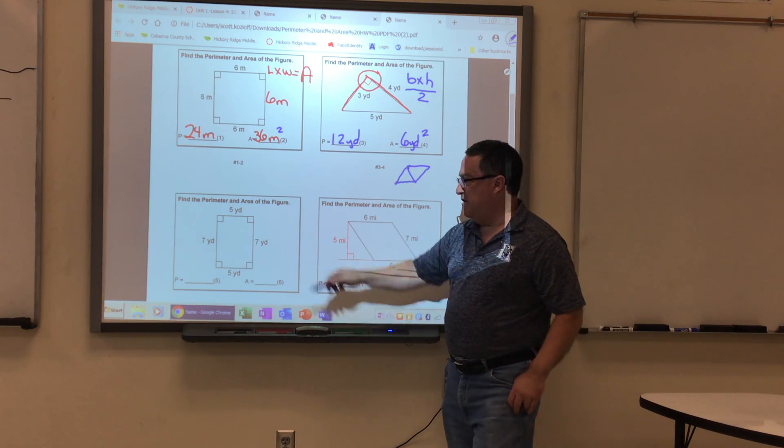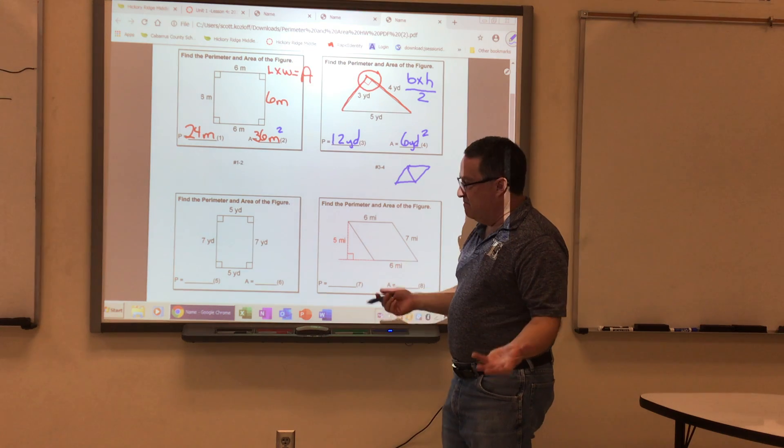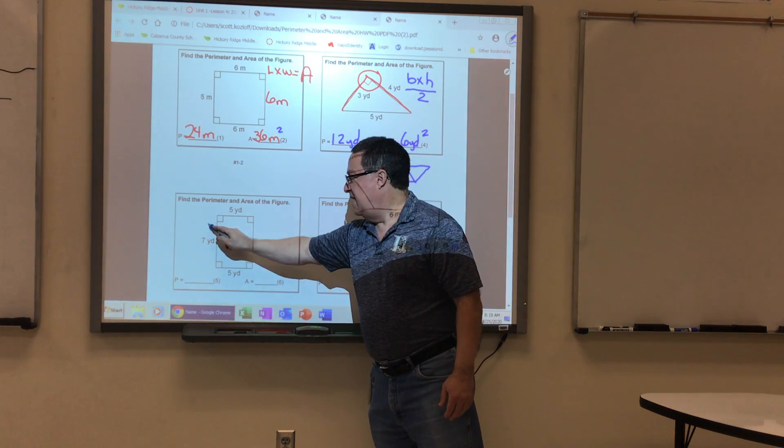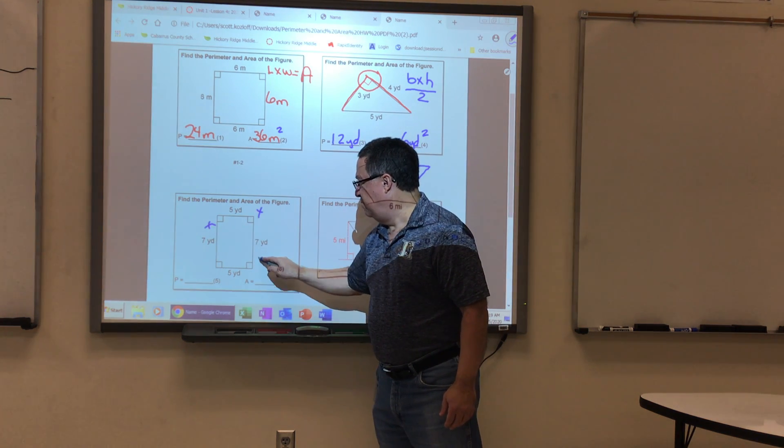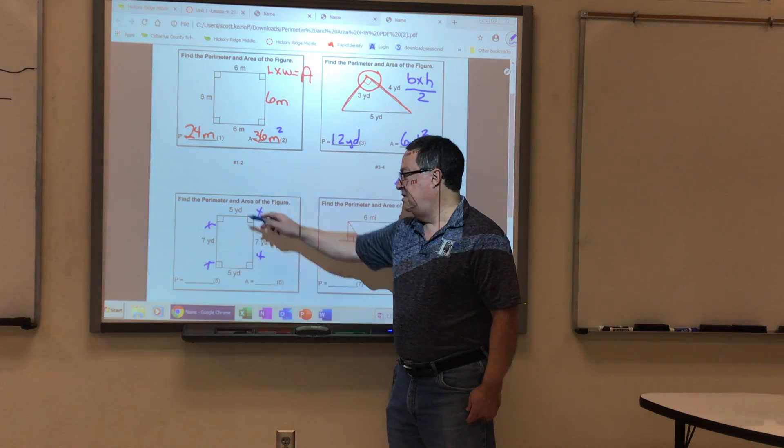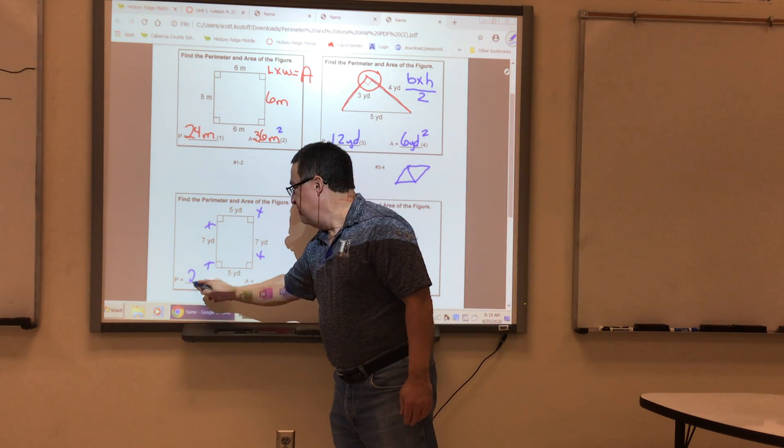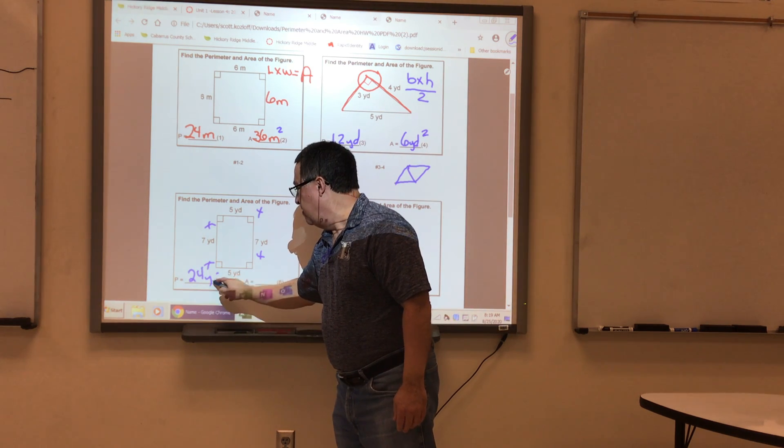All right, for number five and number six, find the perimeter of a rectangle, very similar. I'm adding all sides. Five plus five is 10, 10 plus 14 is 24. That would be 24 yards.